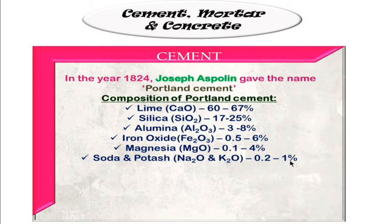Soda and potash are 0.2 to 1 percent. You can remember these ingredients and approximately remember these percentages, as they may ask about the composition or the percentage of lime added to Portland cement. These formulas are just for your understanding.